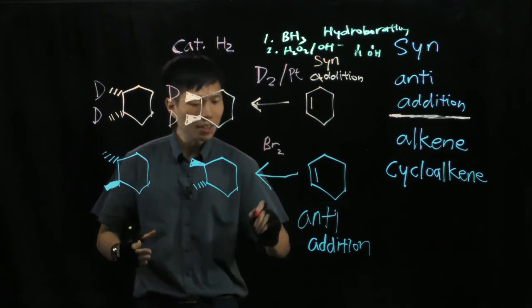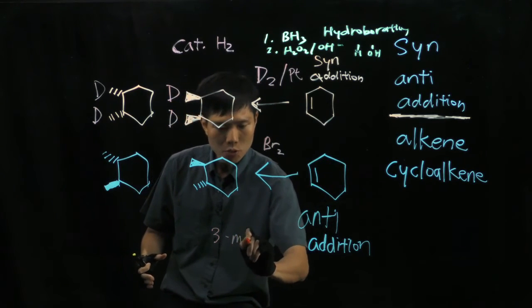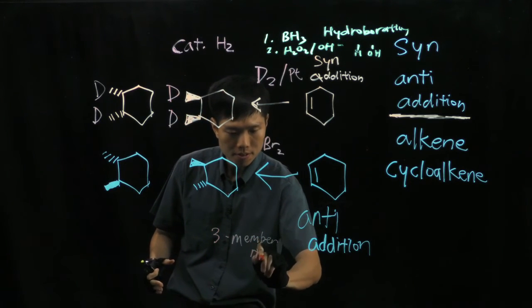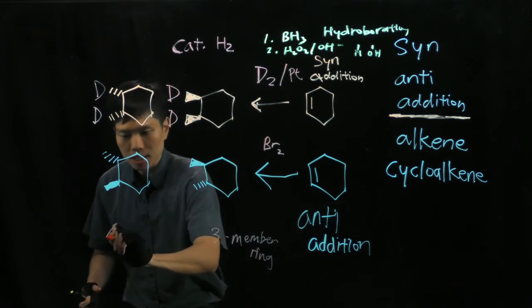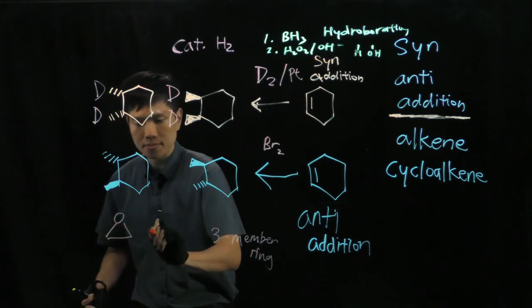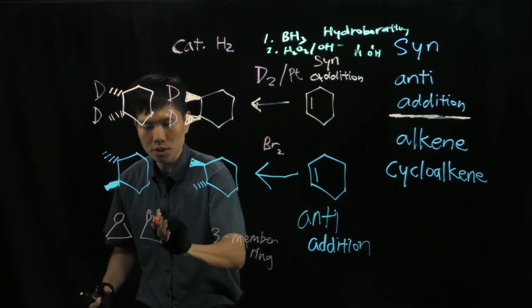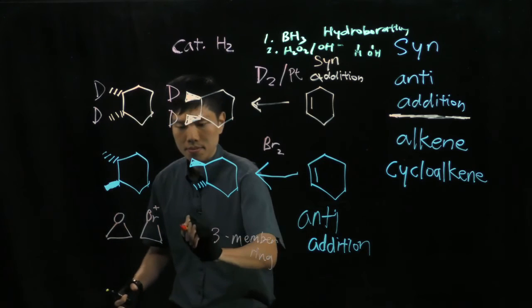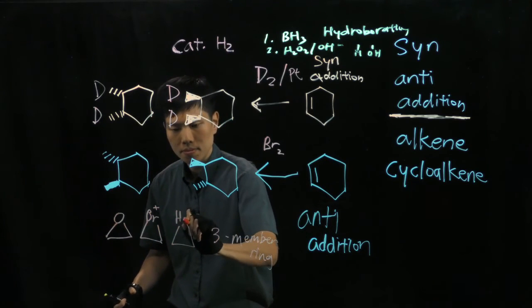So every time you see a 3-member ring, epoxide, bromonium, mercurium, then you must have an anti-addition.